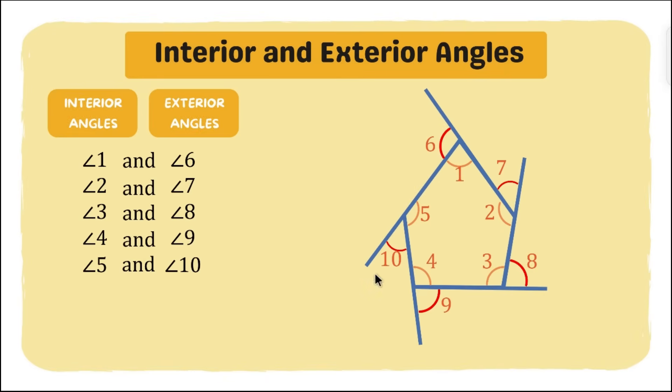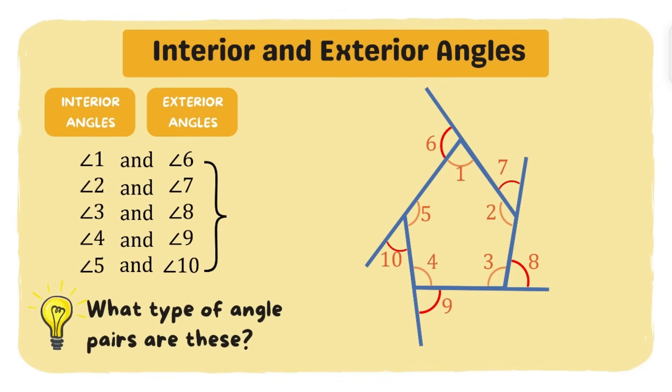Now the question is, what type of angle pairs are these? I'll give you time to think. You can pause the video and then play it after answering my question. Okay, these are adjacent angles. As you can see, they have a common side, a common vertex, and they do not overlap. In simpler words, they are next to each other.